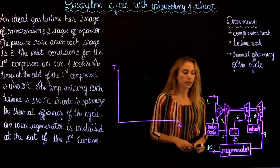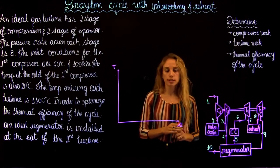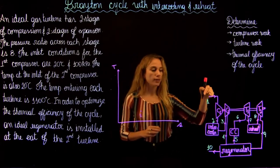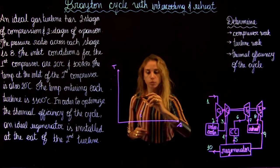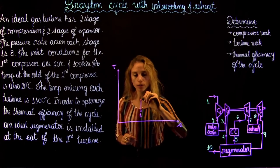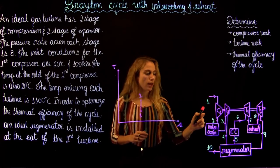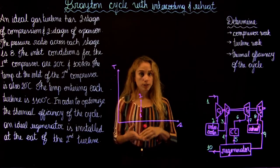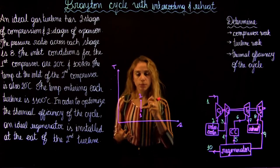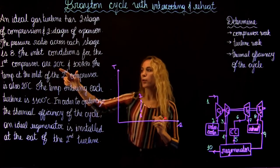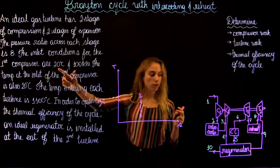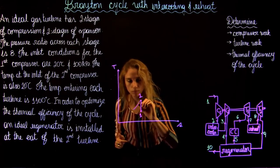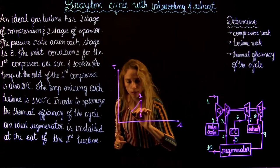This is how our process diagram looks like. We're going to draw our TS diagram. We have the air going in at state 1, and then it goes through the isentropic compression of the first compressor — going up in temperature with constant entropy. Then from 2 to 3, we go through the intercooler, cooling down the fluid at constant pressure. We're told that the inlet temperature for both compressors, T1 and T3, are the same.